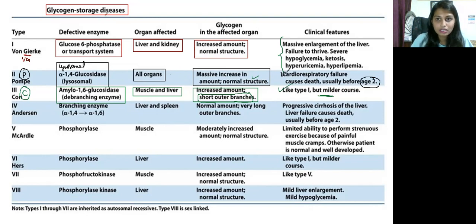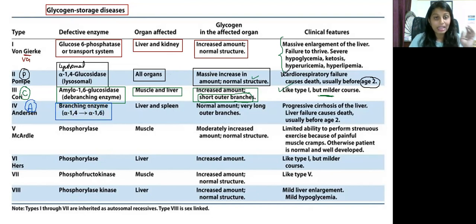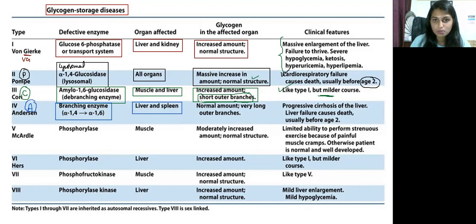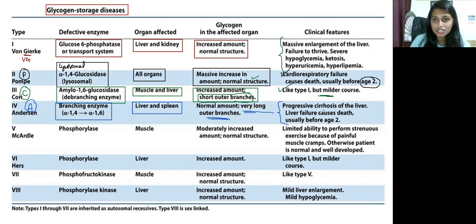Type 4 glycogen storage disease is Anderson disease. The deficient enzyme is the branching enzyme (between alpha-1,4 and alpha-1,6 linkages). The organs affected are liver and spleen. The amount of glycogen is normal, but the glycogen structure shows very long outer branches because of the branching enzyme deficiency. Clinical features include progressive cirrhosis of the liver, liver failure, and death usually before age two in children.